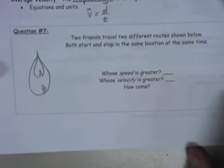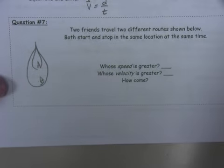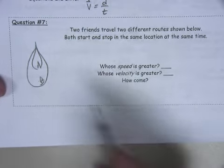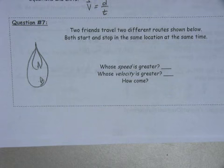All right, question number seven. Two friends travel two different routes below, both start and stop in the same location at the same time. And we had something similar, a question similar to this earlier in this chapter. And this is the same question, we're just asking about velocity instead of speed.